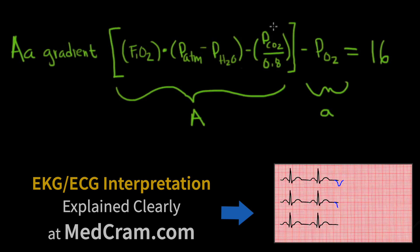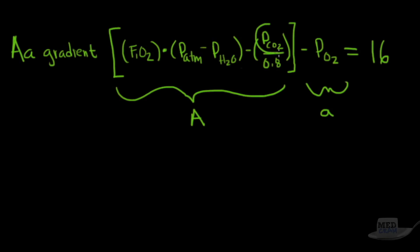You can see here if you have hypoventilation, you're going to have an increase in this factor here, which is going to cause this factor here to be bigger, which subtracted from this factor is going to make this whole A smaller. As a result, this is going to be smaller as well. And your A-a gradient actually in hypoventilation stays about the same.